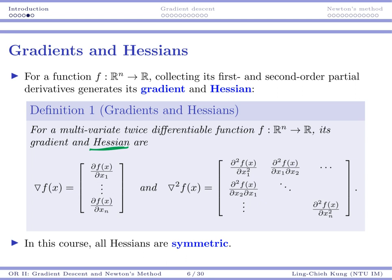So the Hessian is represented by the reversed triangle with a square. That means a Hessian. And a Hessian is always an n by n matrix if you are having n inputs. So that's a Hessian matrix.